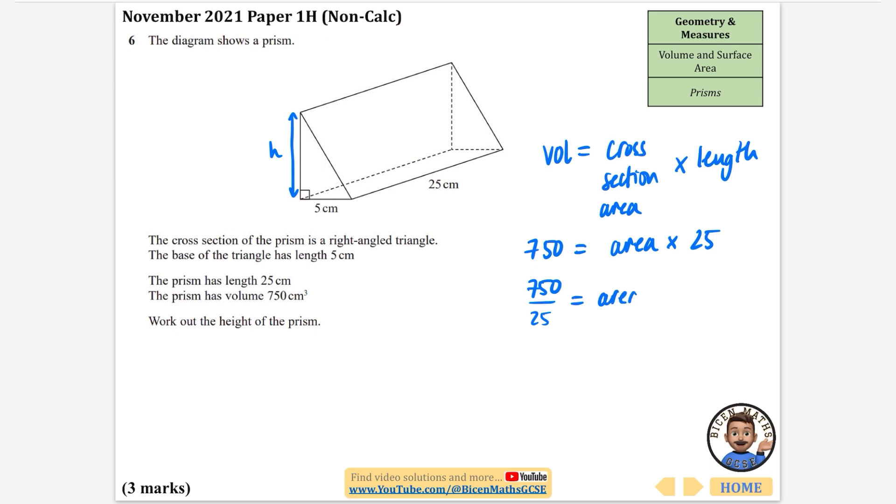750 ÷ 25—let's see how many times 25 goes into 750. 25 goes into 75 three times, so the area of the triangle is equal to 30.